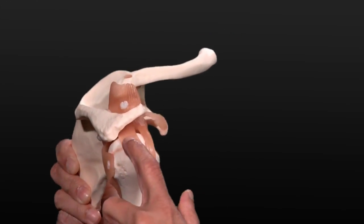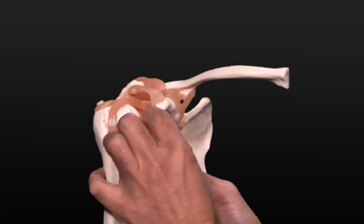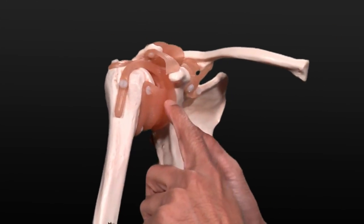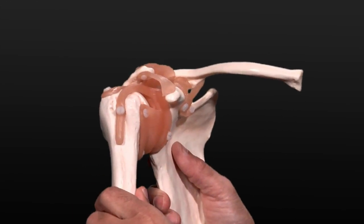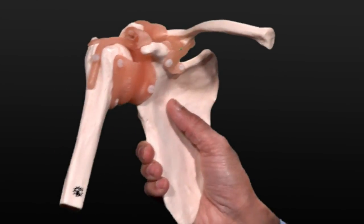We can fix the rotator cuff and also the cartilage called a labrum inside the joint. The labrum can get torn in a dislocation, and we can put the camera all the way down into the joint itself and fix the labrum.